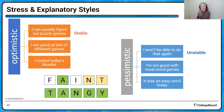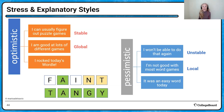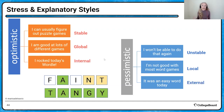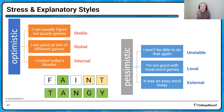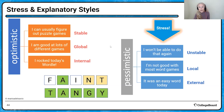When we talk about explanatory styles, you may hear about stable versus unstable — things are going to stay the same or change — and global or local — whether you can generalize what happened to the rest of your life. It could also be internal versus external. The important point is that the way we handle stress — why some people handle it better than others — is because of having a particular explanatory style. A pessimistic one creates a lot more stress.